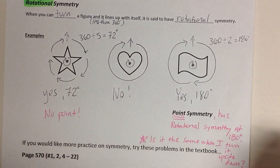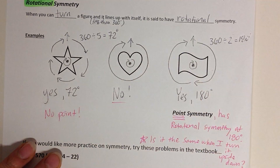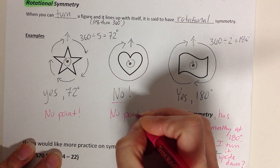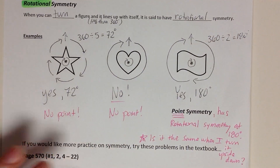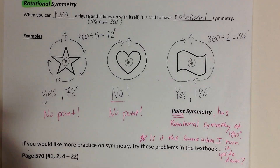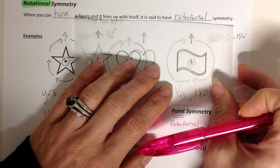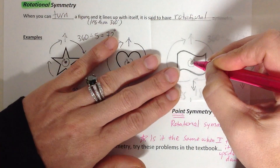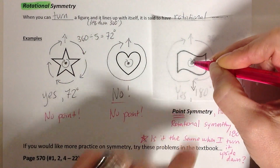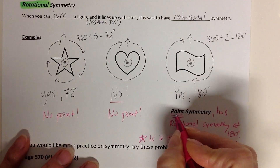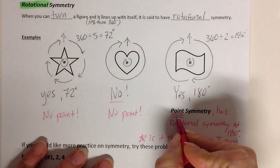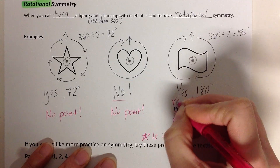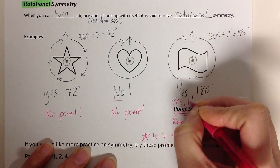The heart doesn't even have rotational symmetry, so no point — absolutely not. And then this last one, take the flag. Turn that upside down. My arrow is pointing upside down — that has rotational symmetry of 180 degrees. So this flag right here, yes, it has point symmetry.